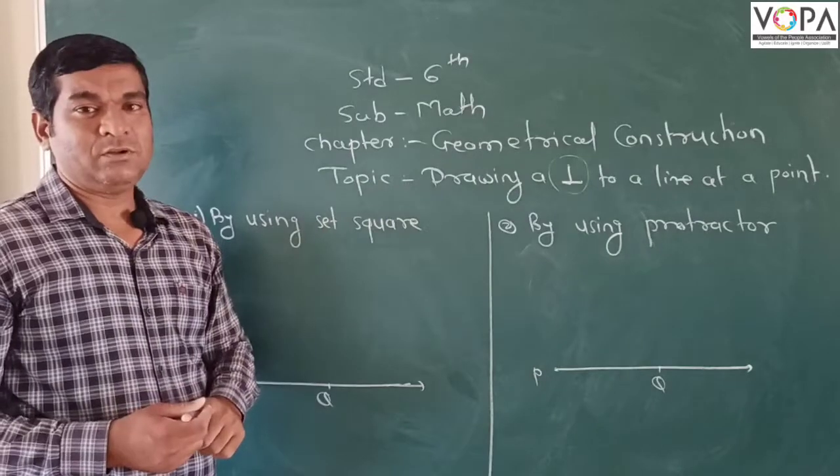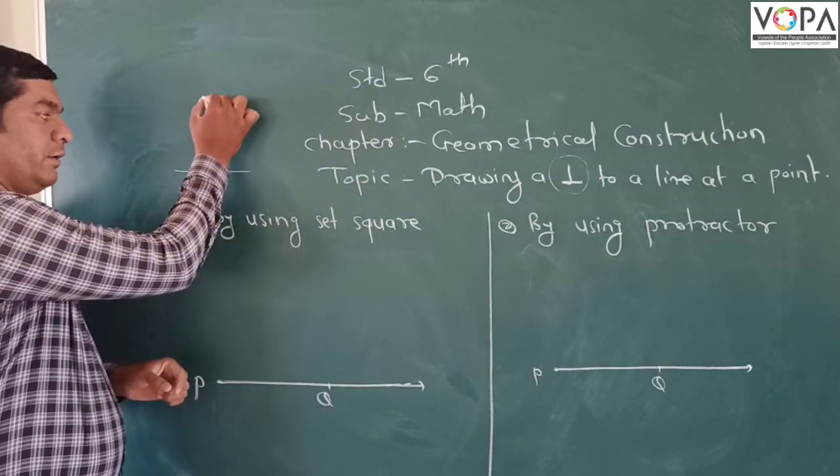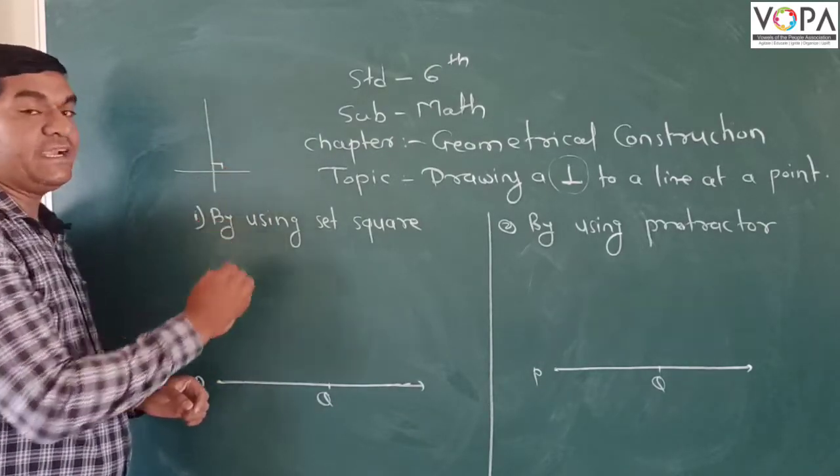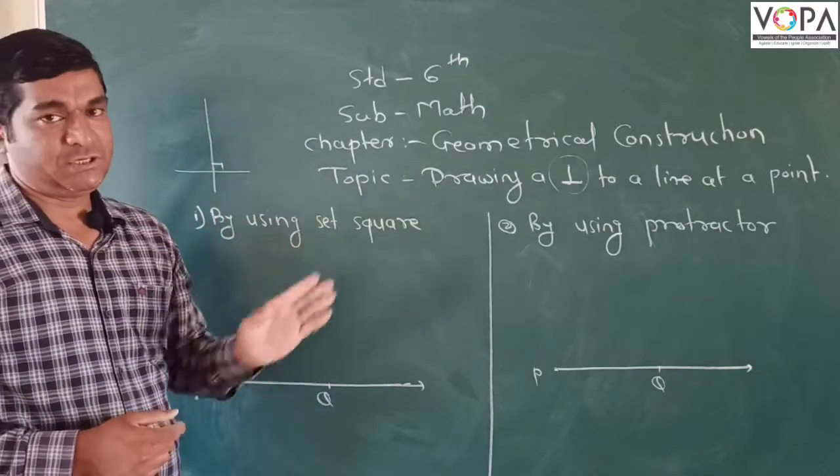So what is a perpendicular? A perpendicular means on a line, you put two lines intersecting each other, and if they make an angle of 90 degrees with each other, then you call this as perpendicular to each other.